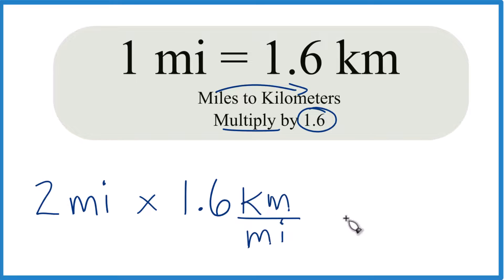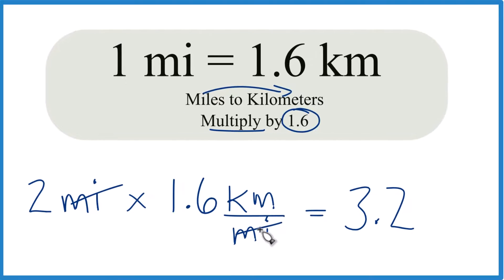So two times 1.6, that's 3.2. And because we have miles here on the top and the bottom, we can cancel those out. That leaves us with kilometers.